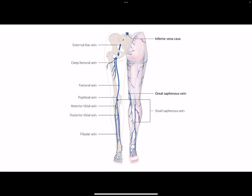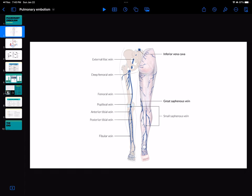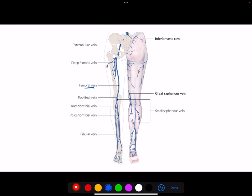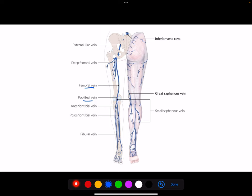Working from the bottom to the top, we'll start with deep venous thrombosis, as these are significant risk factors for pulmonary embolisms. When we do these bedside ultrasounds looking for DVTs, typically we're evaluating the femoral and popliteal veins — specifically common femoral, superficial femoral, and popliteal.